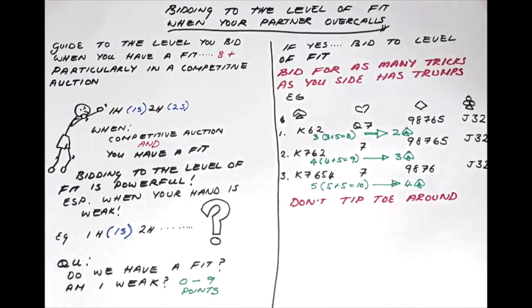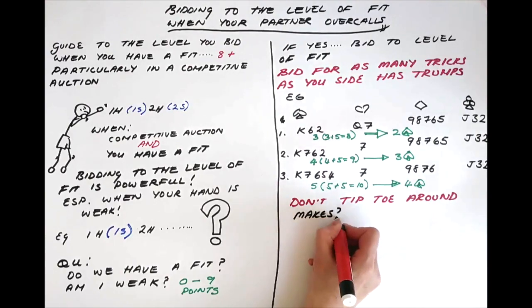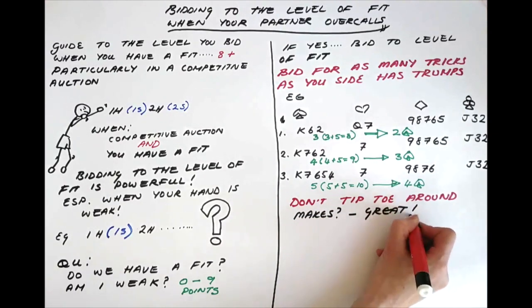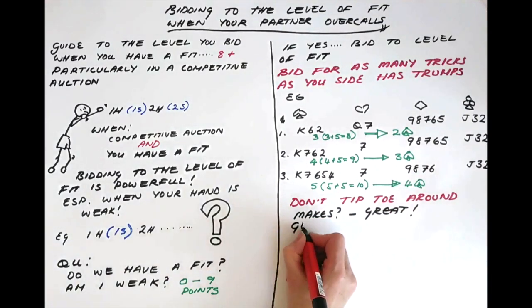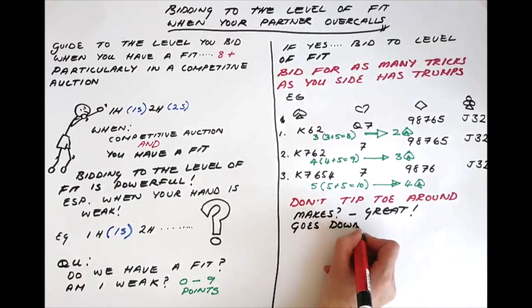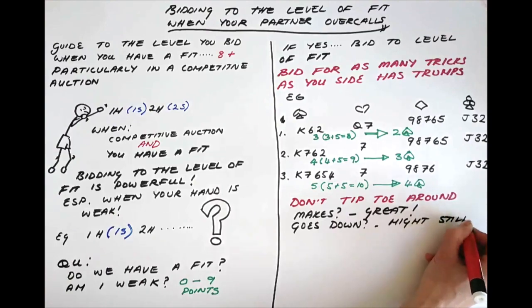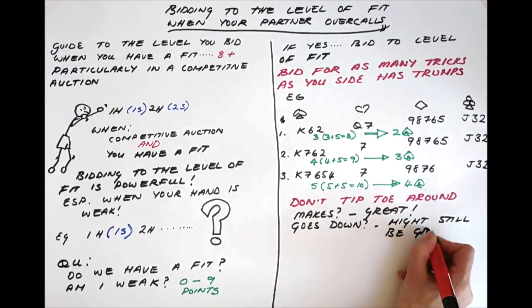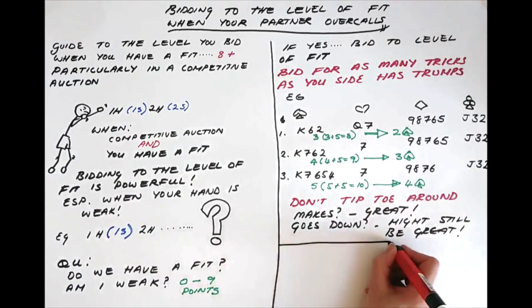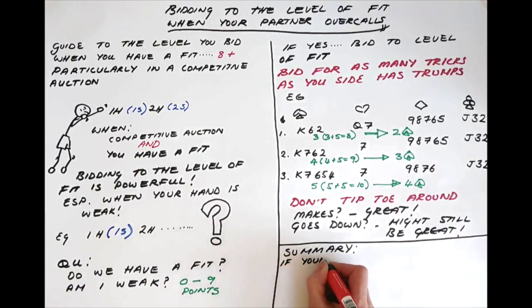The idea is that if you make your contract, then that's great. But if you go down, it could still be great and this is because it could be a better result for you because the opponents could probably have made their contract. You will usually go down for fewer points than the opponents will make.